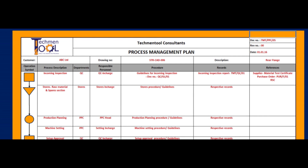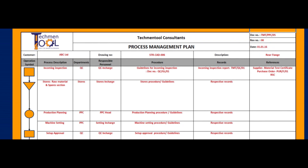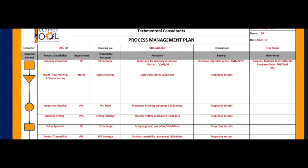Some organizations maintain a process management plan. It is similar to a process flow chart, but has a little bit more information about the process and its records or documentation.